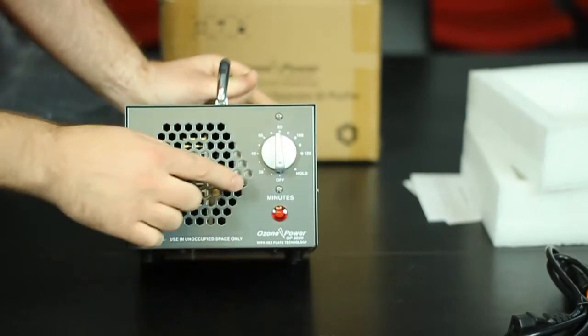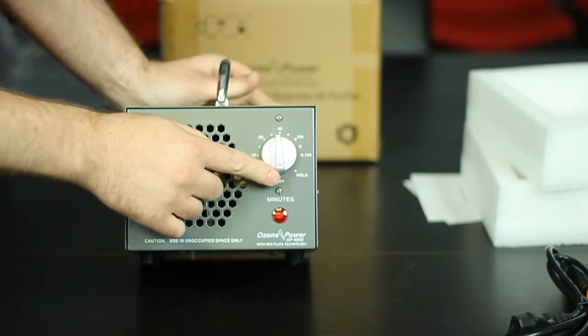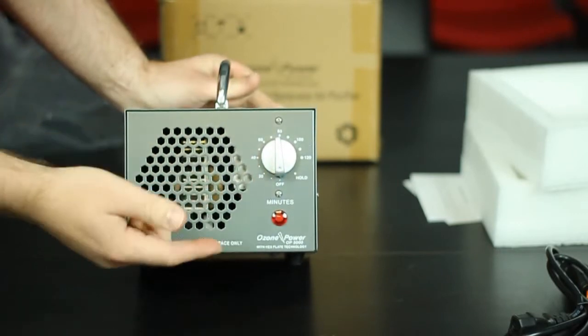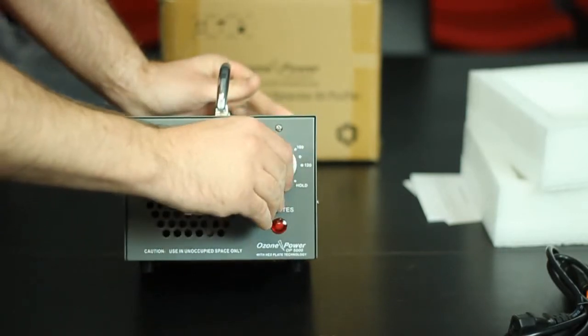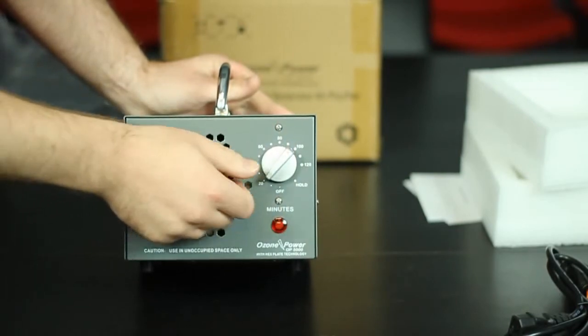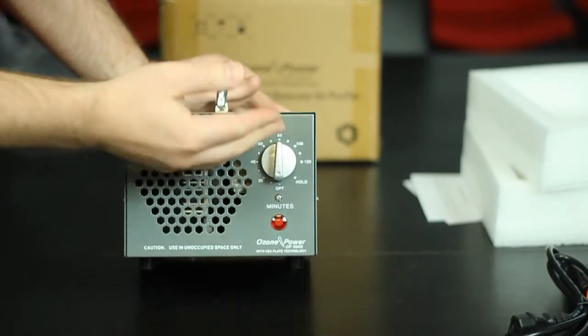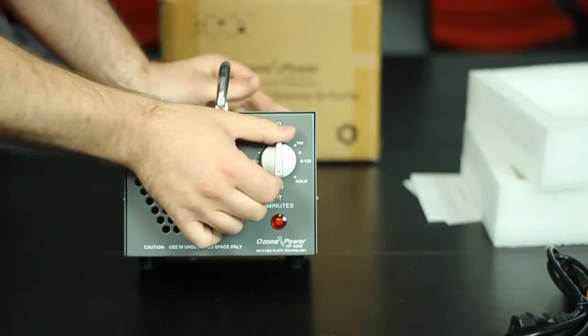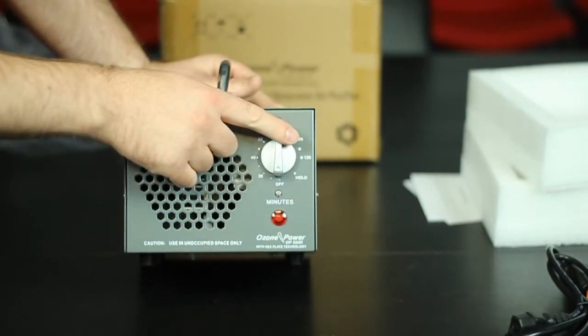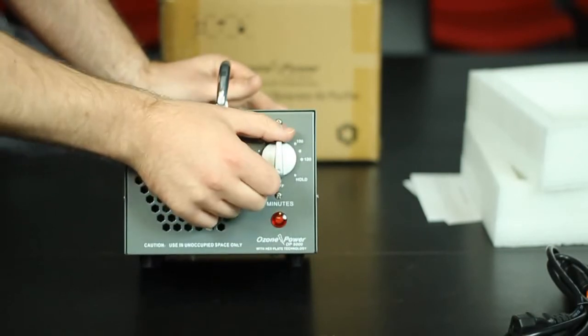So if you look at the dial, the thick dimpled part, that's the pointer. To use the timer, rotate it clockwise to your desired setting. If you want to leave it running for longer than two hours, you can use the hold function. To use the hold function, turn it counterclockwise from the off position.